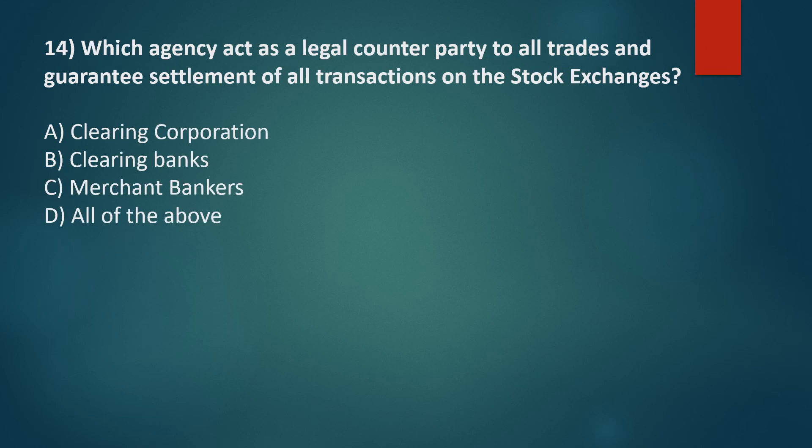Which agency acts as a legal counterparty to all trades and guarantees settlement of all transactions on the stock exchanges? Option A: Clearing corporation, Option B: Clearing banks, Option C: Merchant bankers, Option D: All of the above. The correct answer is Option A: Clearing corporation.